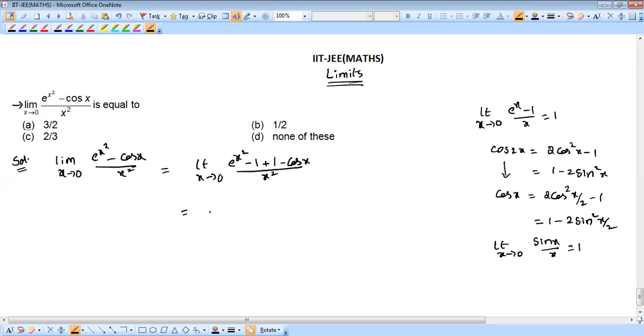Now break into two functions: limit x to 0, e power x square minus 1 by x square, plus limit x tends to 0, 1 minus cos x divided by x square.